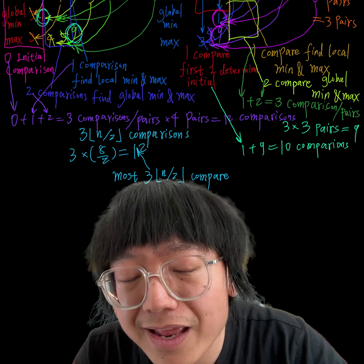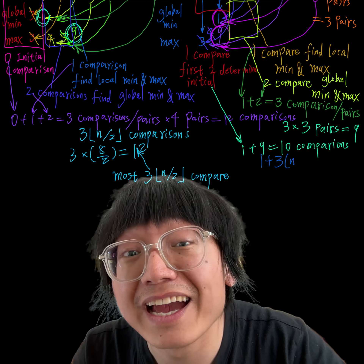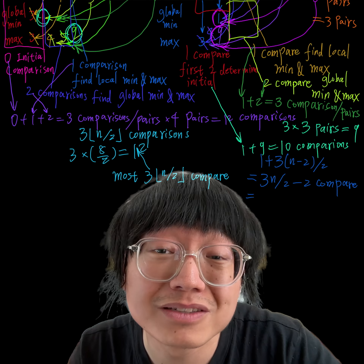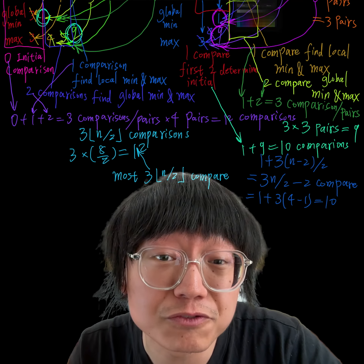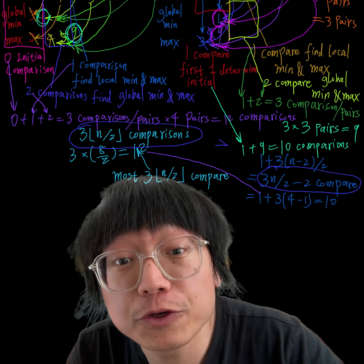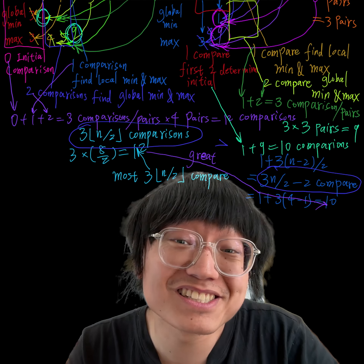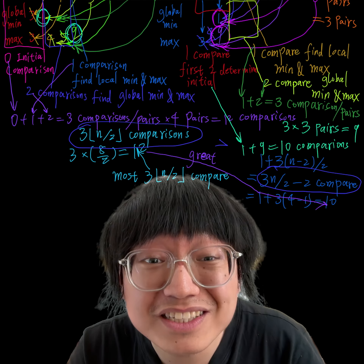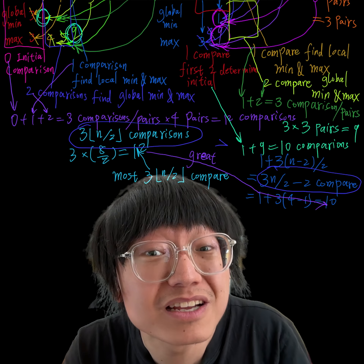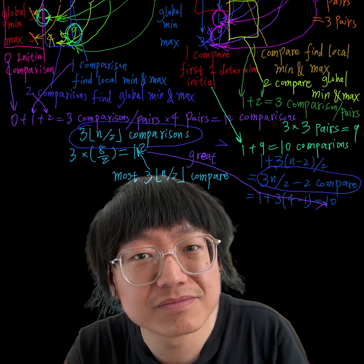The total number of comparisons is at most 3 times floor(n/2). When n is odd, floor(9/2) = 4, leading to 3 times 4 = 12 comparisons. When n is even, floor(8/2) = 4, leading to 1 plus 3 times (4-1) = 10 comparisons. This analysis underscores how this method leverages paired comparisons effectively to reduce overall computational expense by maximizing the information extracted per comparison.